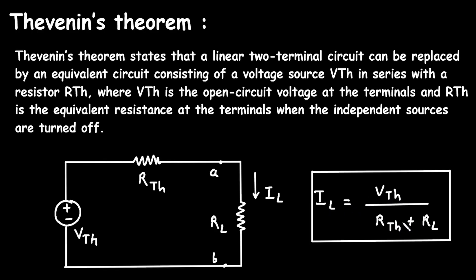This is simply Ohm's law — current equals voltage divided by resistance. Here VTH is the voltage and (RTH + RL) is the total resistance. When resistors are connected in series, we add them: RTH plus RL. This is called Thevenin's equivalent circuit, and this is the statement of Thevenin's Theorem.